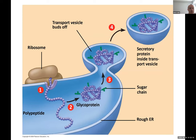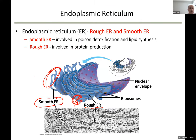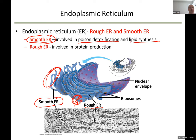These vesicles from the endoplasmic reticulum carry the newly synthesized protein to the Golgi, which rearranges it into its functional form. Smooth endoplasmic reticulum, since it doesn't have ribosomes attached, cannot be involved in protein synthesis. Smooth ER is involved in detoxification and lipid synthesis.